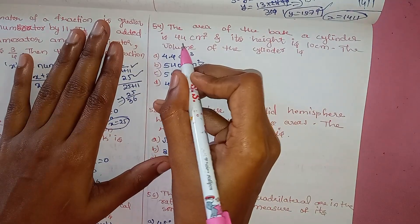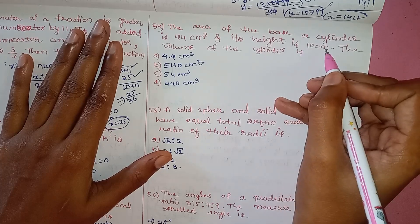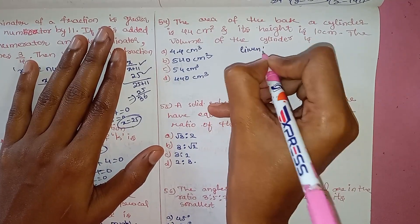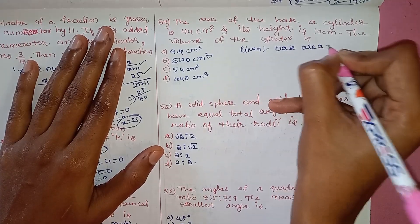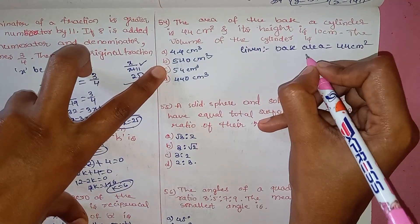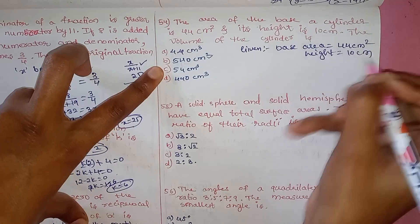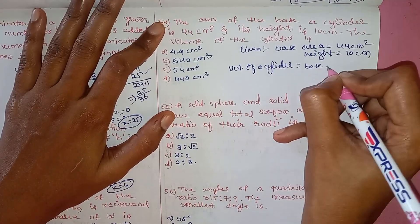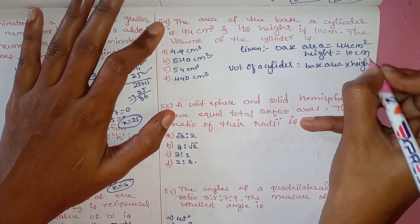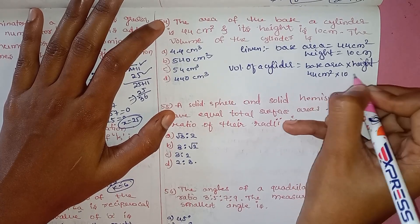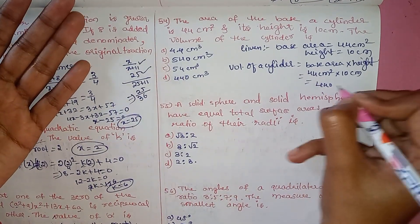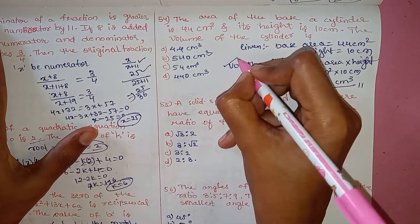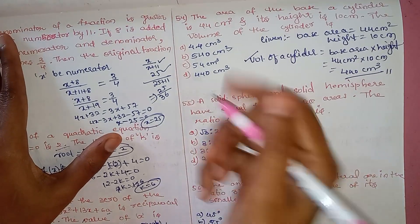Question 54: The area of the base of a cylinder is 44 cm² and its height is 10 cm. The volume of the cylinder is? The volume of a cylinder equals base area times height. Base area is 44 cm² and height is 10 cm, so the volume is 440 cubic centimeters. Option D is the answer.